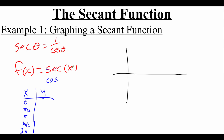Plugging in x = 0, cosine of 0 is 1. Plugging in π/2, cosine of π/2 is 0. Plugging in π, cosine of π is −1. Plugging in 3π/2, we get 0. And plugging in 2π, we get 1. So I'm going to plot out these ordered pairs.